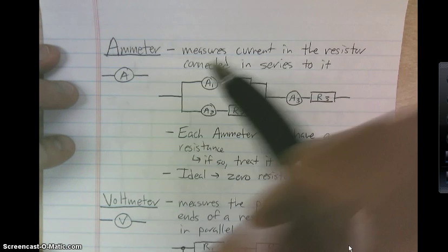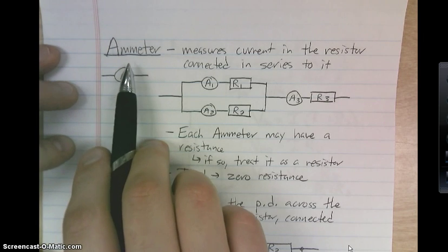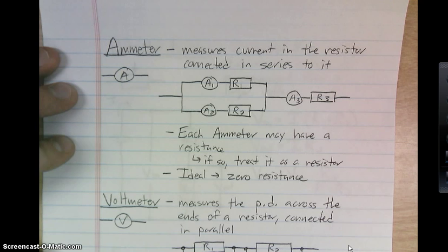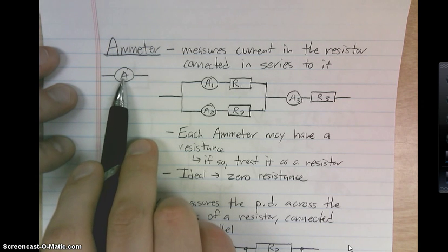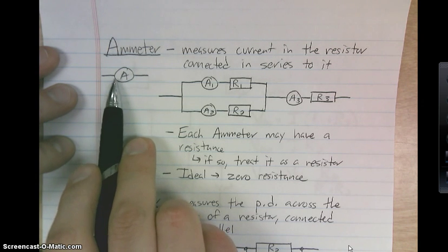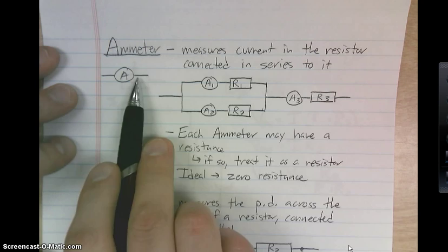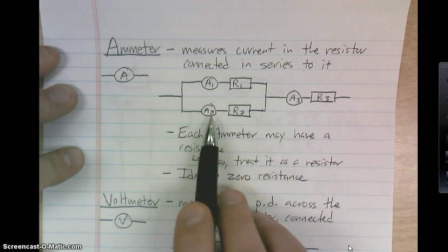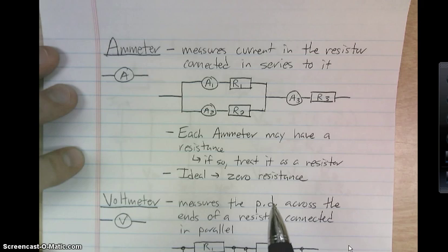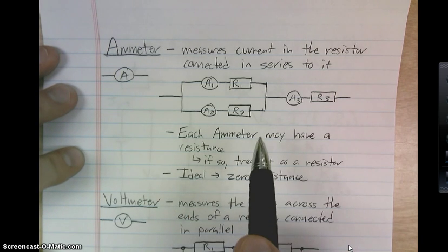The first thing we're going to talk about is an ammeter, which is an object that measures current, and you're always going to hook it into series with whichever object you want to find the current for. The symbol that you're going to see for any ammeter in a circuit drawing will look like this. I've drawn in different ammeters that would have been connected in place given the resistor that we want to find the current traveling through.